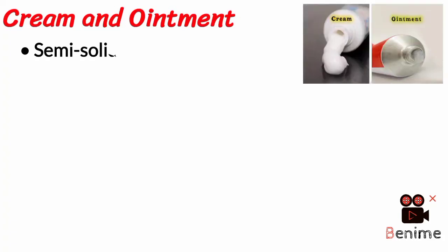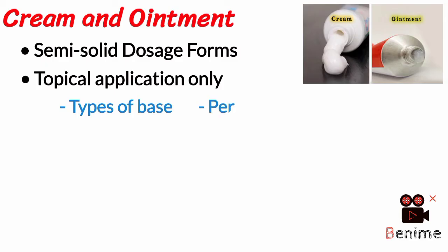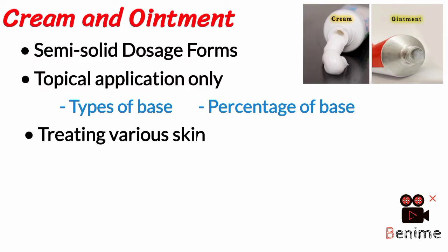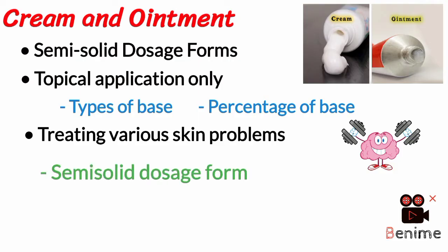Cream and ointment are semi-solid dosage forms intended for topical application only. The main difference between cream and ointment is regarding the types of base used or percentage of base used. Cream and ointment both are effective at treating various skin problems as anti-inflammatory, antibiotics, antifungal, and protective agents. Although cream and ointment both are semi-solid dosage forms, they have many differences.